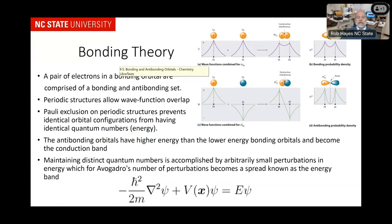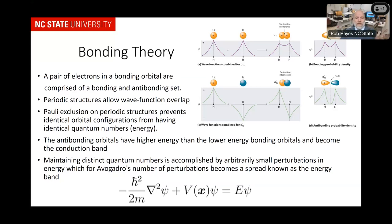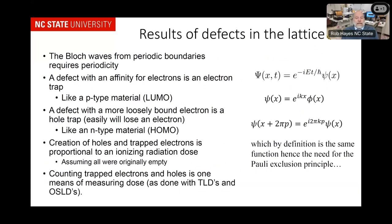There are two solutions: one is bonding and one is anti-bonding. Now we're going to talk about how the anti-bonding solution becomes the conduction band and the bonding solution becomes the valence band once we put these into a lattice. With Schrödinger's equation in a lattice, we have periodicity, and periodicity becomes the boundary conditions. When we have periodicity, all of those energy levels basically have to be the same.